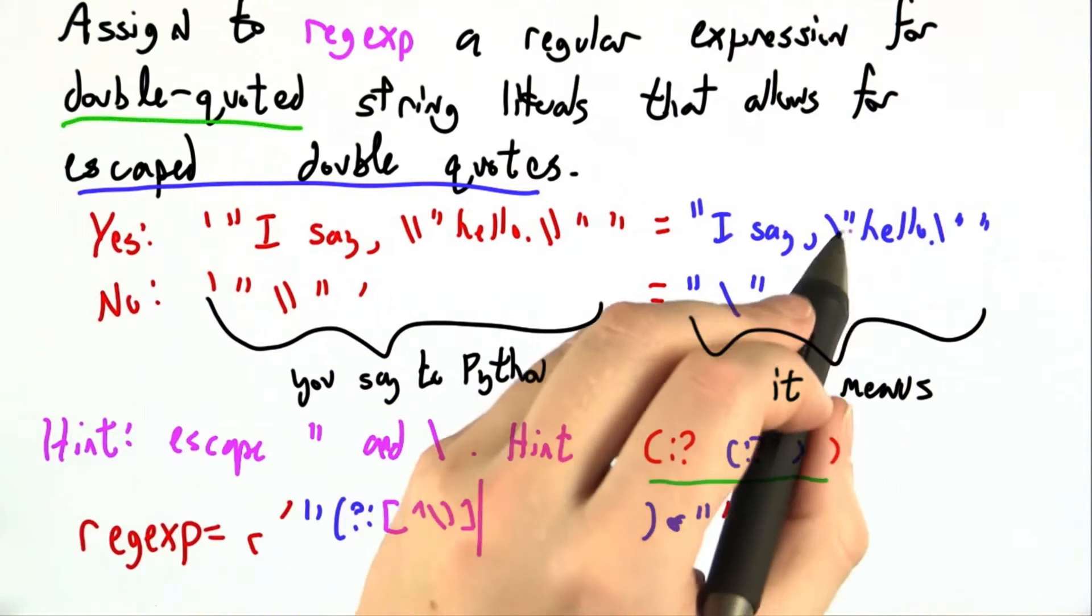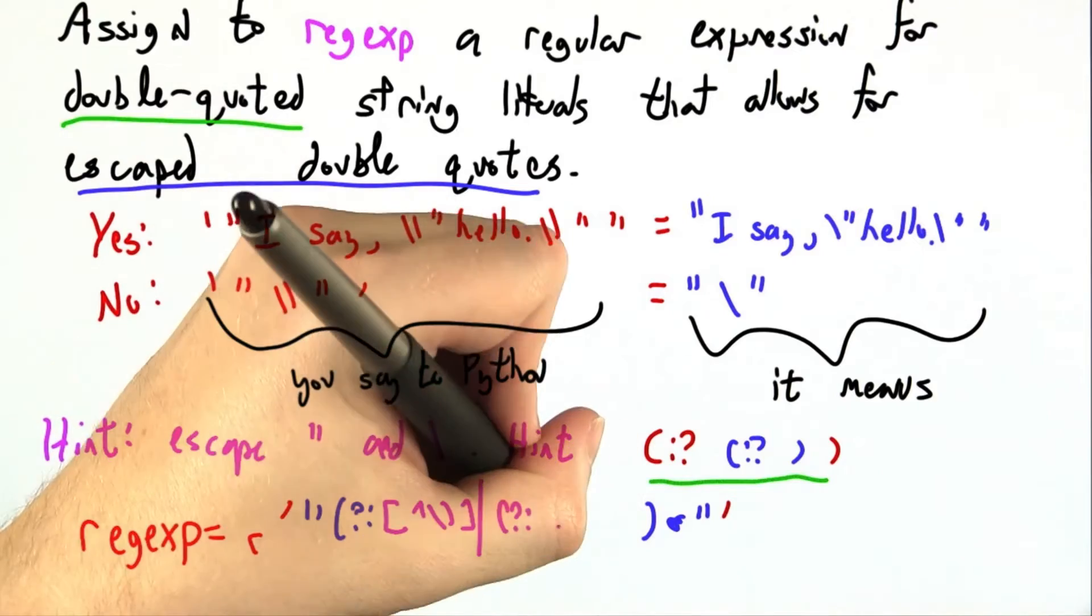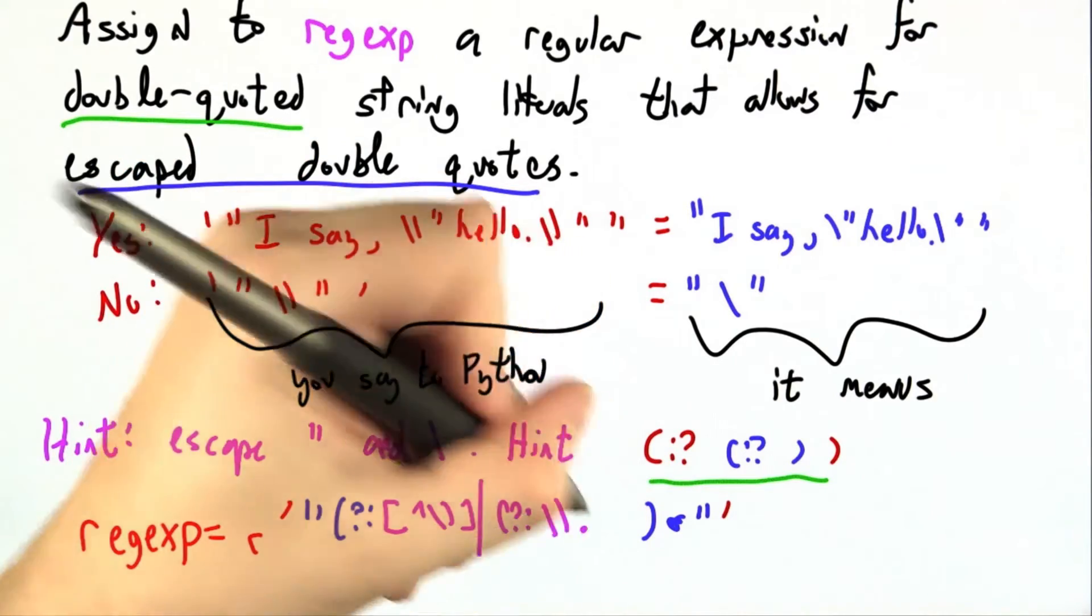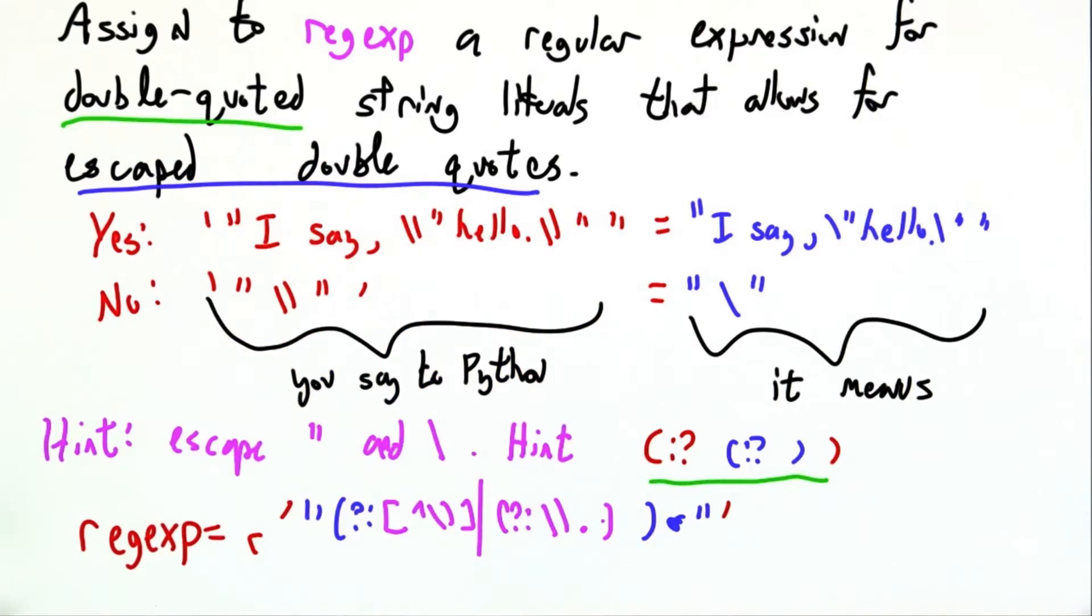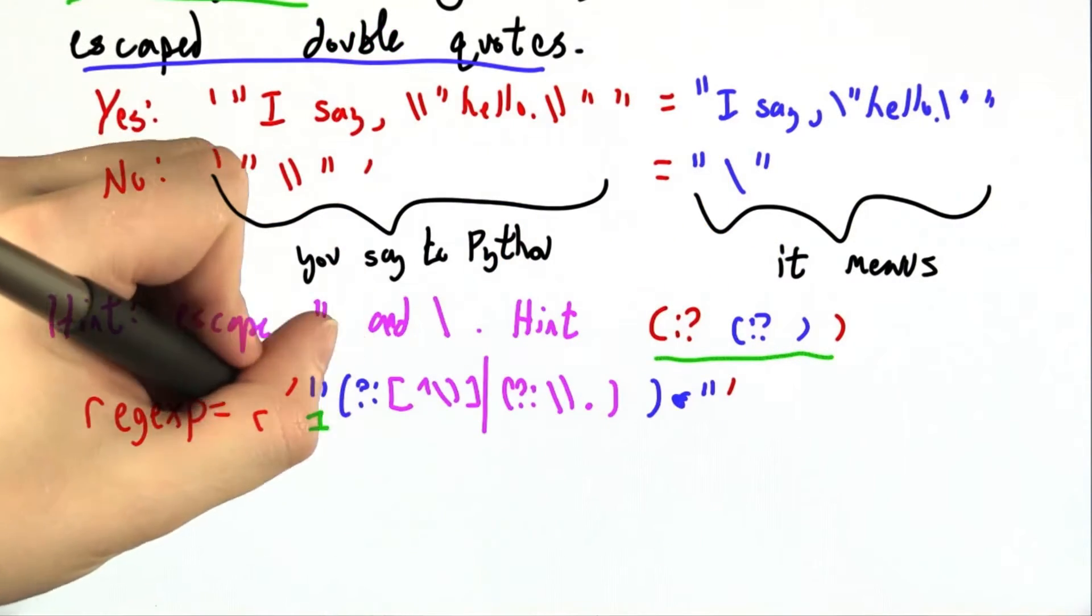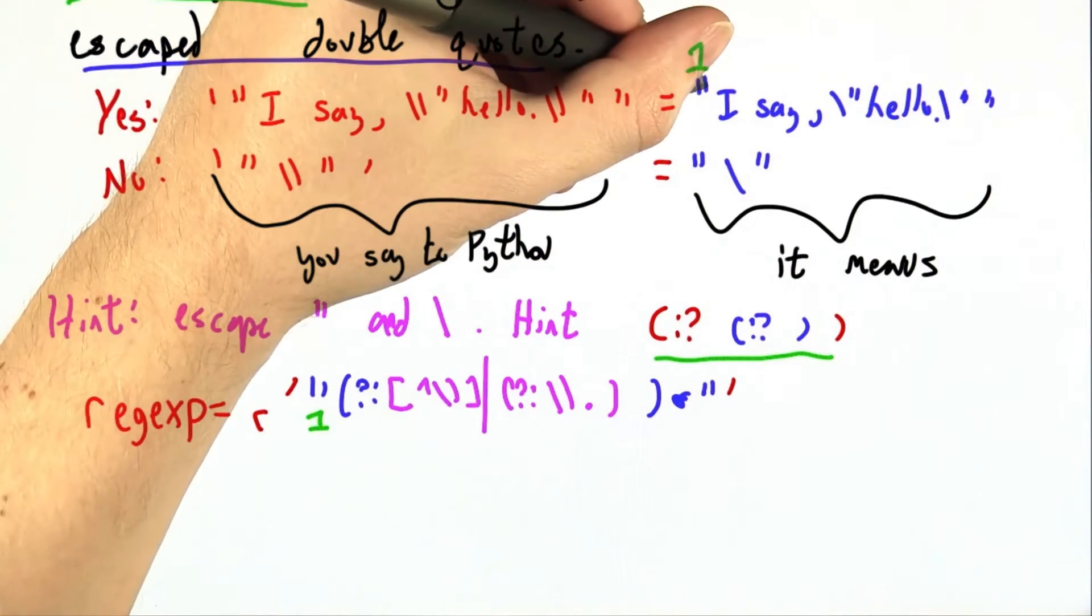Or you could actually have an escape sequence like this backslash close quote. That looks like a literal backslash followed by anything, and then it's done. So let me just diagram this a little more. Say this opening quote is one.